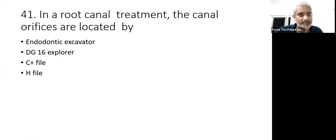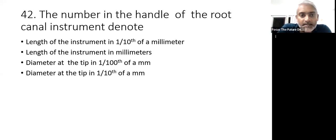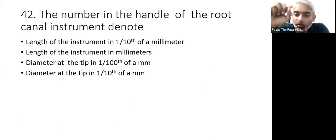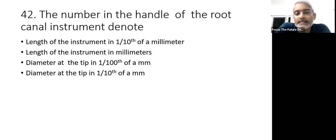We will have more questions. The number in the handle of the root canal instrument denotes — again, this is something we have already discussed. When you have a number in the handle of a root canal instrument, they might even give you a picture and ask what is the tip size of this instrument. When you say you have a K-file of size 40, what does that 40 mean? You can put your answers in the chat box. The main advantage is that when you have theory which is already covered, it is very easy to answer the questions. The answer is: the diameter of the tip.